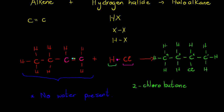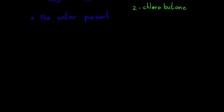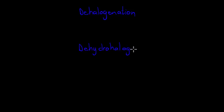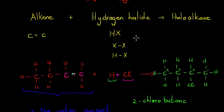We can also look at two other reactions: de-halogenation and de-hydrohalogenation. These are literally just the opposites of what we looked at just now. That is where we would start with a halo alkane as the reactants, and our products will be what we had as reactants in the previous examples.